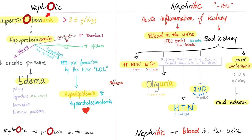Nephrotic syndrome has 4 clinical features: high protein in the urine, low protein in the blood, edema, and hyperlipidemia. But nephritic syndrome has 7 features: hypertension, hematuria, jugular venous distension, oliguria, mild edema and proteinuria, and intrarenal azotemia — which is acute kidney failure.